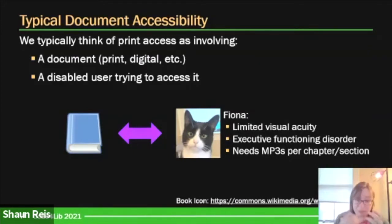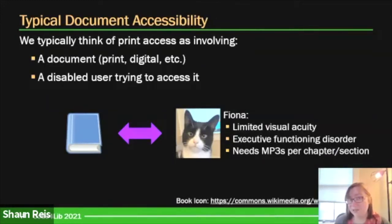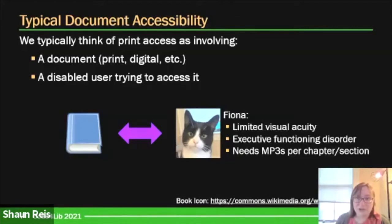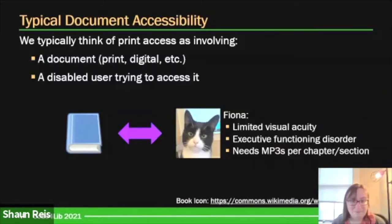Let's look at how document accessibility typically works in the library. We typically have some form of text — a document could be print, digital, or an article. And then we have a patron. The patrons here are going to be represented by cute pictures of people's pets. Fiona is a cute tuxedo cat. She has limited visual acuity and an executive functioning disorder, meaning she needs support with organization. The combination of these disabilities means she really prefers listening to her texts, and asked for them to be transformed into MP3s separated by chapter or section.